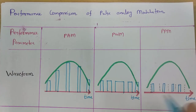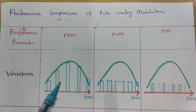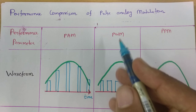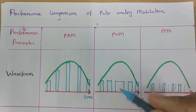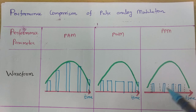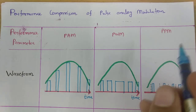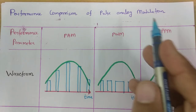So ultimately, based on the waveform, one can clearly understand: in Pulse Amplitude Modulation, amplitude of pulse will change with respect to the modulating signal; in Pulse Width Modulation, width of pulse will change with respect to the modulating signal; and in Pulse Position Modulation, position of pulse will change with respect to the modulating signal. This is how modulation will happen with pulse analog modulation.